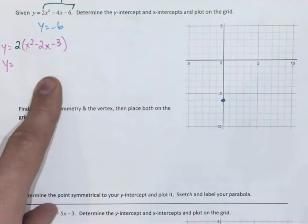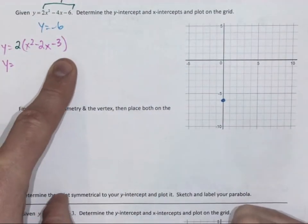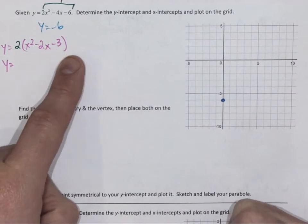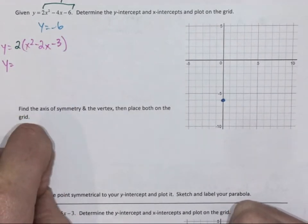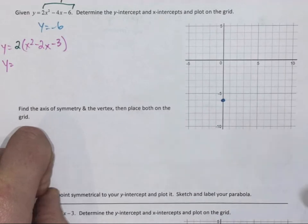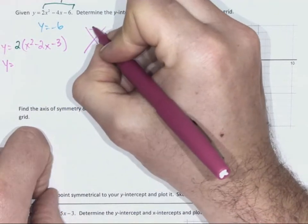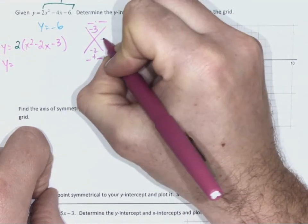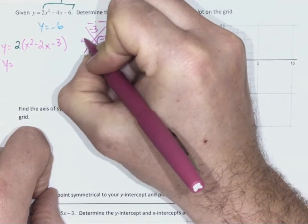So I need 2 numbers that multiply to negative 3 and add to negative 2. Those numbers are negative 3 and positive 1.